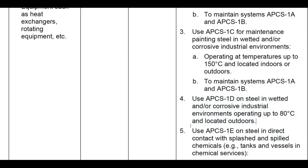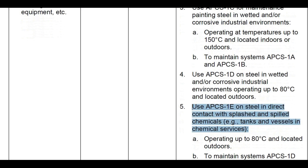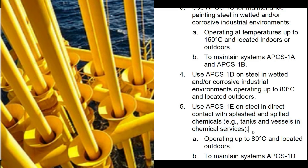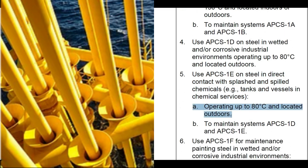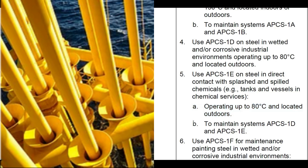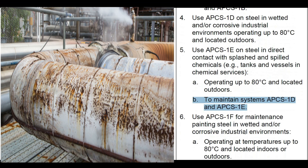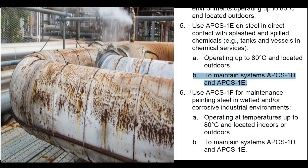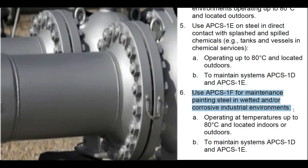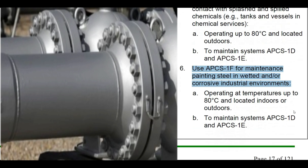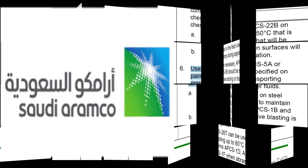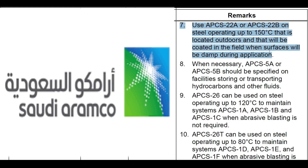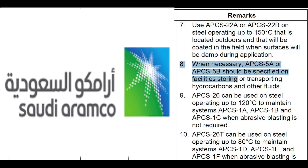Point 4: Use APCS1D on steel in wetted and/or corrosive industrial environments operating up to 80°C and located outdoors. Point 5: Use APCS1E on steel in direct contact with splashed and spilled chemicals, such as tanks and vessels in chemical services, operating up to 80°C and located outdoors, and to maintain APCS1D and APCS1E systems. Point 6: Use APCS1F for maintenance painting steel in wetted and/or corrosive environments, operating up to 80°C indoors or outdoors, to maintain APCS1D and APCS1E. Point 7: Use APCS22A or 22B on steel operating up to 150°C located outdoors, when the surface will be damp during field application.